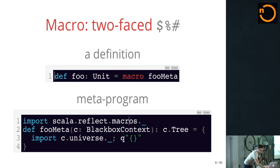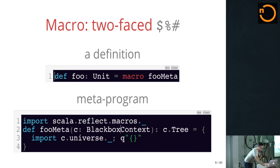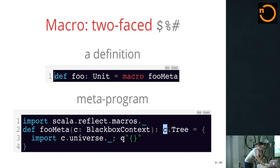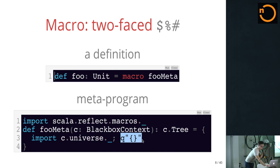You'll see this everywhere in your macros — you'll need that package. I'll talk more about what the black box context is. For now, just think about it as your hook into the compiler. The result of your macro is going to be a tree — a representation of a Scala program. The universe here is the compiler itself, and you're going to import all of it. Then we're using a quasi-quote to generate a Scala program that consists of unit, the empty block.